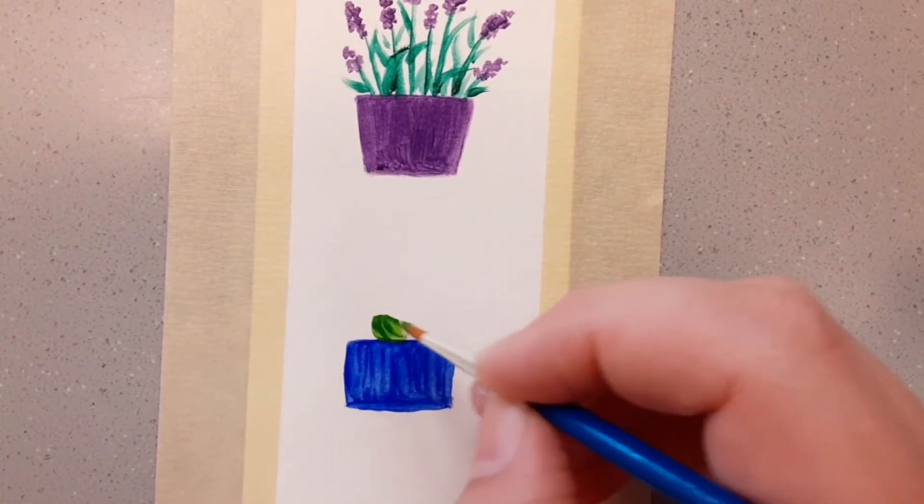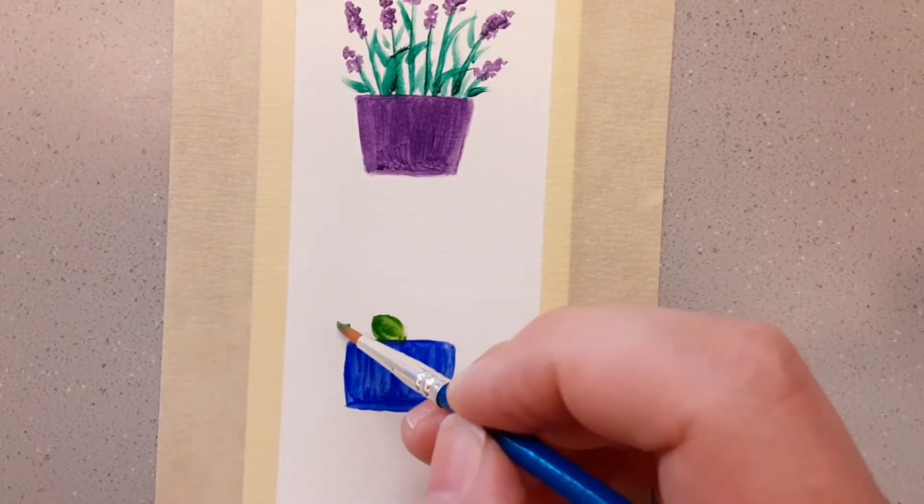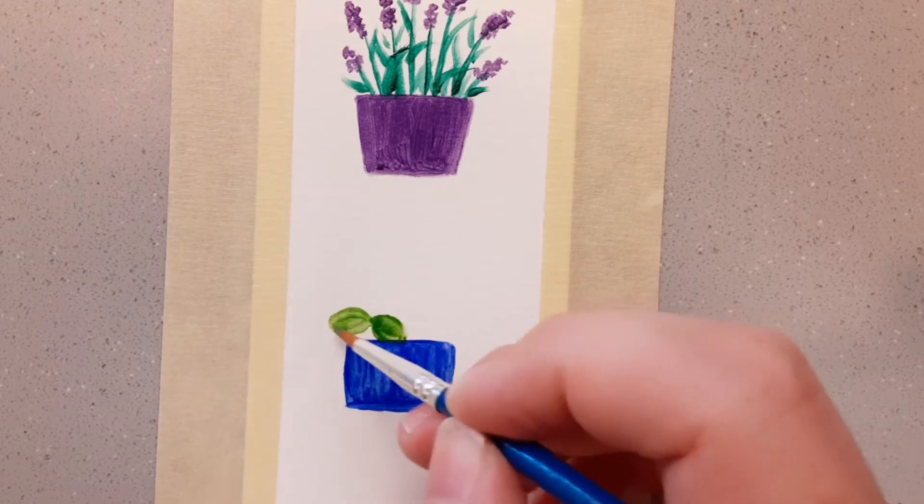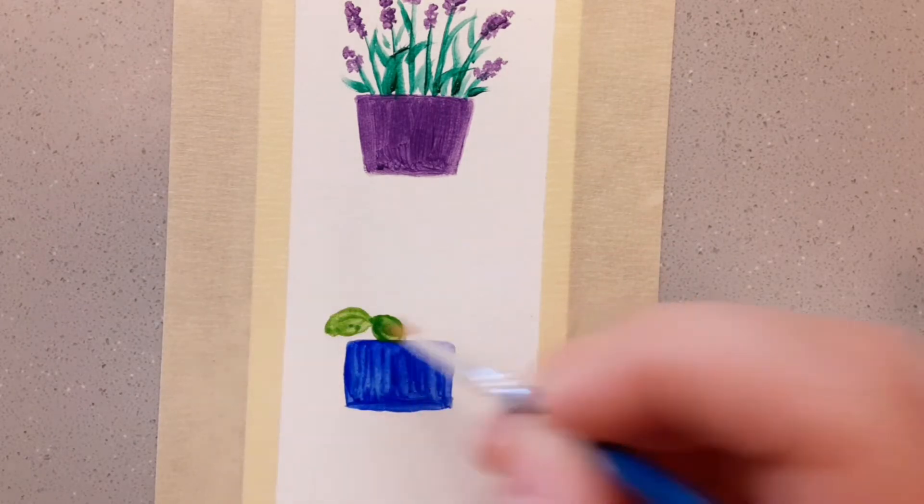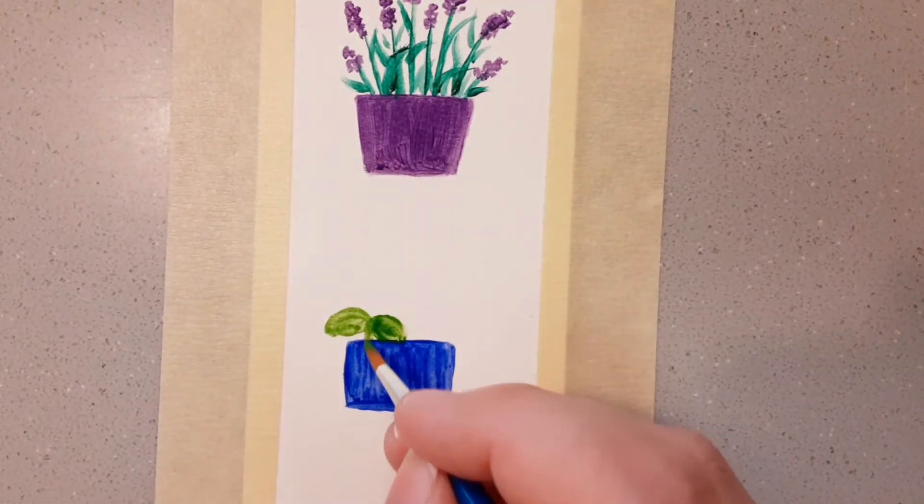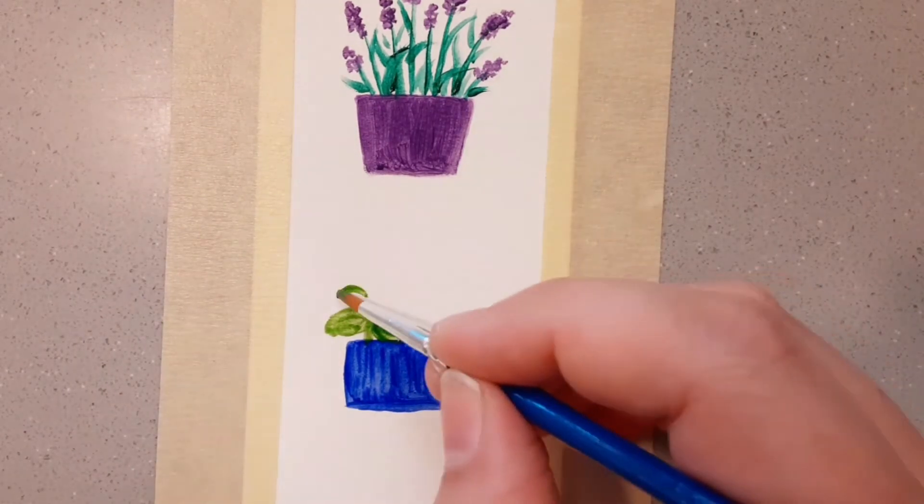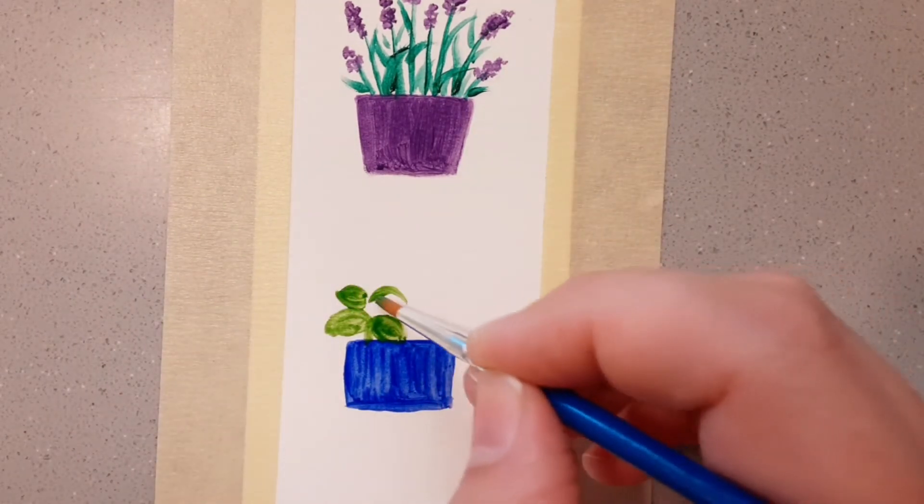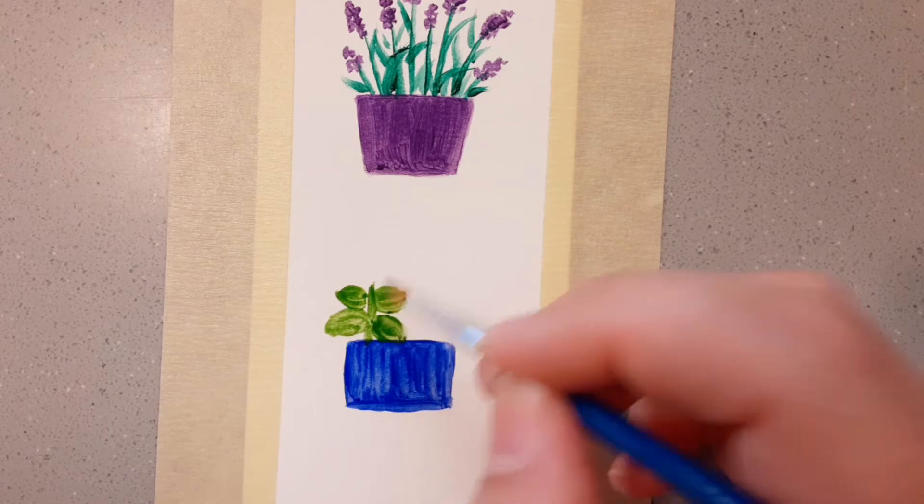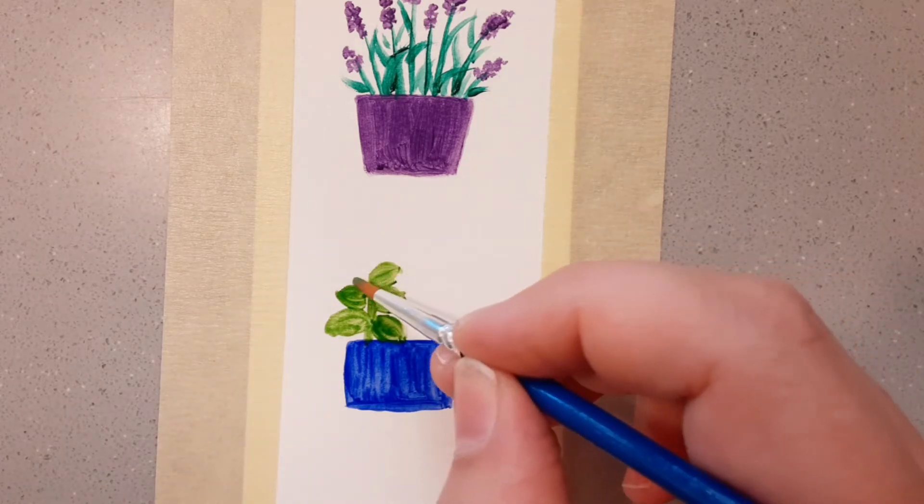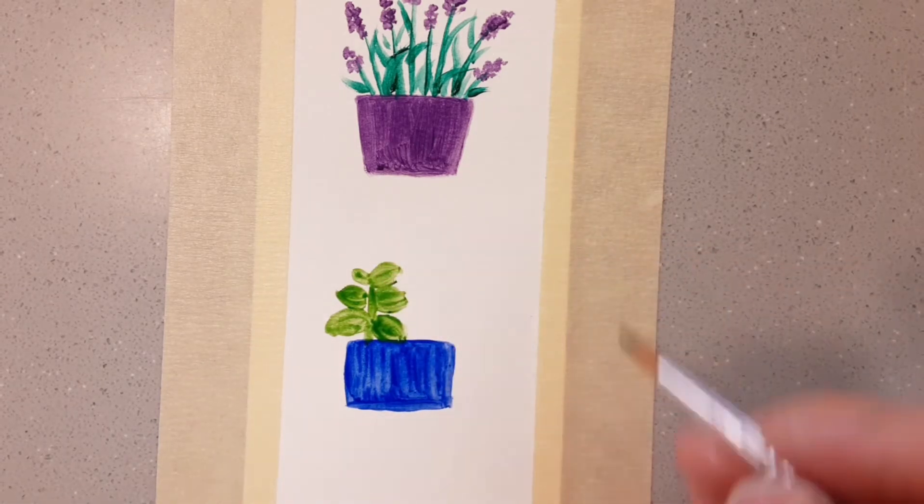Next I'm using green again to make teardrop leaf shapes that come outward from a center point like they're attached to a stem. Make those smaller as you work your way up, and having them point in different directions helps again here too, just to get that natural shape.